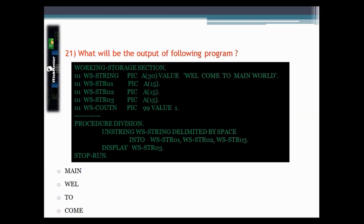This question asks what will be the output of the given piece of code. They have given a string: 'Well, Come, To, Main, World' with spaces as delimiters. Using UNSTRING based on space, with three variables defined: variable one gets 'Well,' variable two gets 'Come,' and variable three gets 'To.' The remaining tokens 'Main' and 'World' have no corresponding variables and are discarded. So the correct answer is: the third variable will contain 'To.'